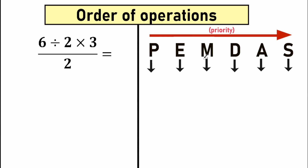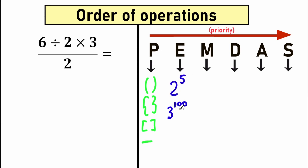PEMDAS is like a checklist where each letter stands for something. P stands for parentheses — including squiggly brackets, square brackets, and grouping symbols. The fraction bar is also a grouping symbol, where we group the numerator and divide it by the denominator. E stands for exponents — basic powers like 2 to the power 5 or 3 to the power 100. After parentheses and grouping symbols, we need to evaluate each of these powers.